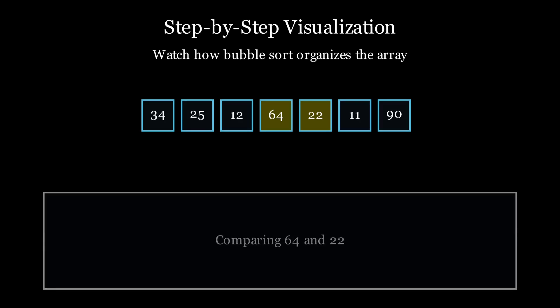This continues until the largest element, 90, bubbles up at the end of the array in the first pass. So we don't need to check the last element anymore, it's already in place. So we will check until the second last element.